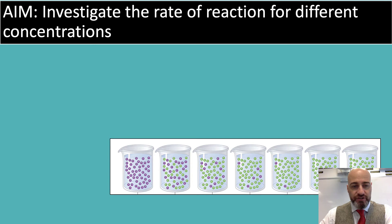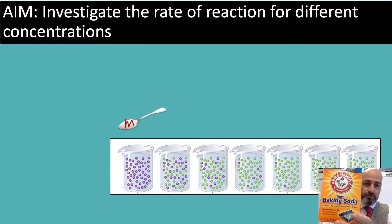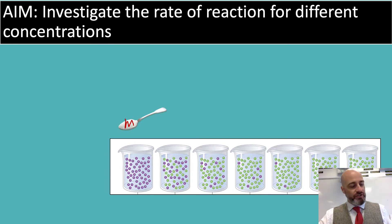So there's our different concentrations. You're going to add a fixed mass of bicarbonate of soda, also known as baking soda, to each solution. And this should help you see the effect of changing the concentration on the rate of reaction.